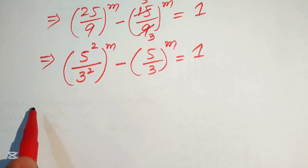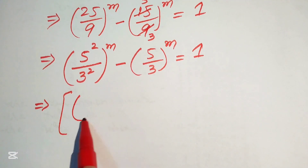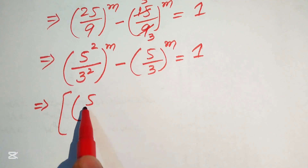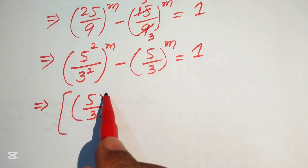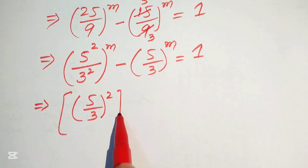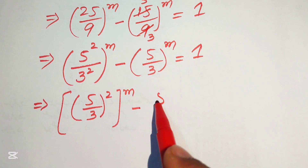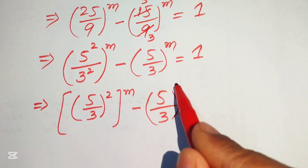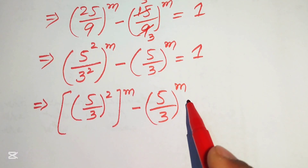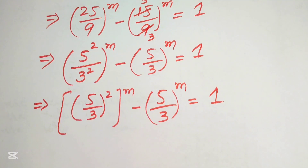Since the exponents on these two terms are the same, we combine them. This is written as (5/3)² to the power of m, minus (5/3) to the power of m, equals 1.